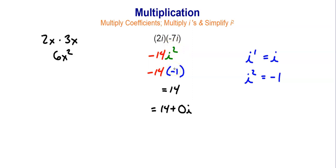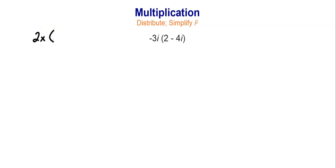Let's look at a slightly more complicated one. In Algebra 1, we sometimes had a monomial times a binomial — for example, we'd distribute 2x to the 3x and distribute 2x to the negative 6. Looking at the example to the right, that's exactly what we're going to do here. We have an imaginary number, negative 3i, times a complex number, 2 minus 4i, and we're going to distribute that negative 3i to what's in the parentheses.